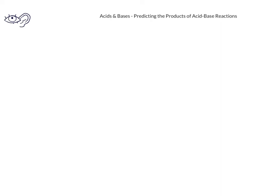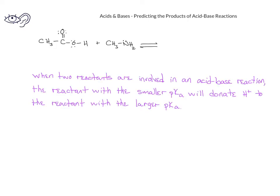When we have two organic compounds involved in a reaction, we want to be able to predict the product of this acid-base reaction. The general rule of thumb we'll use is that when two reactants are involved in an acid-base reaction, the reactant with a smaller pKa, or the one that's more acidic, will donate a hydrogen ion to the reactant with a larger pKa, or the one that is more basic.